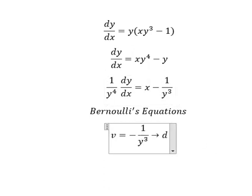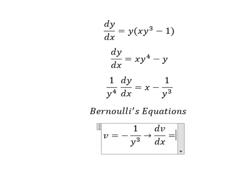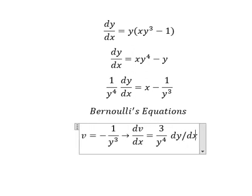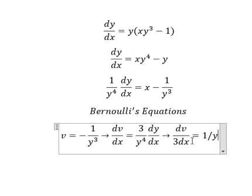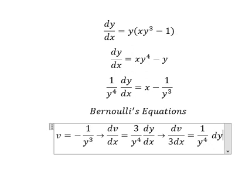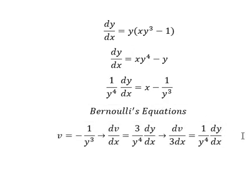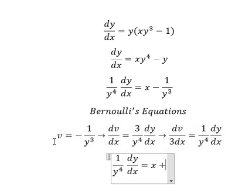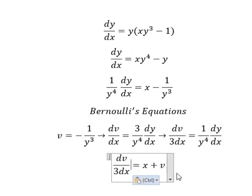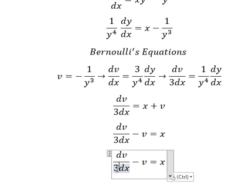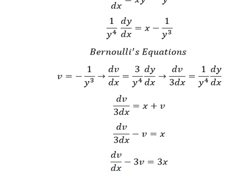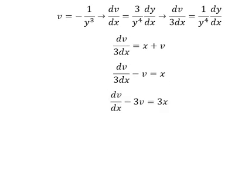We take the derivative of v, which is positive number three over y to the power of 4, dv/dx. Because we don't have number three, we move it to the left. After rearranging, this becomes v. Then we multiply both sides by number three, so this is now a linear differential equation.